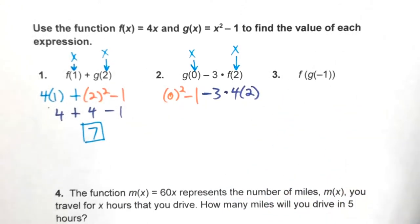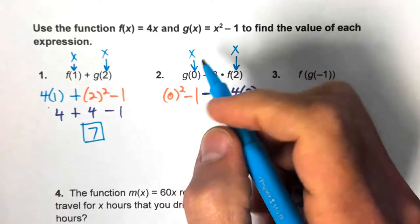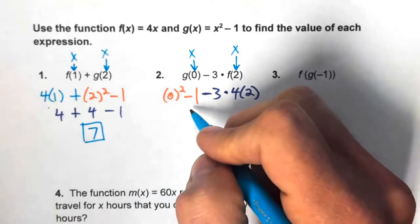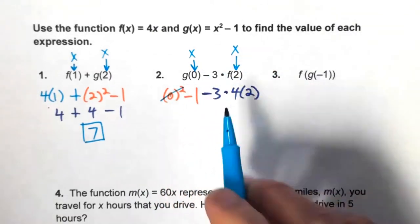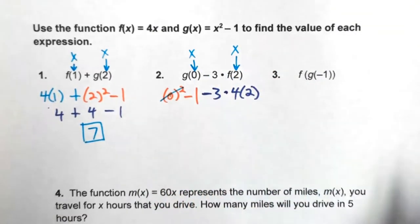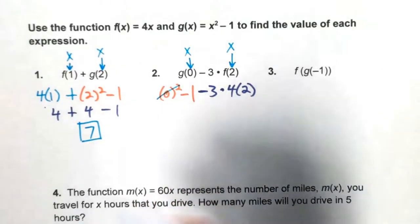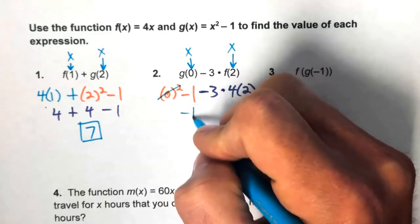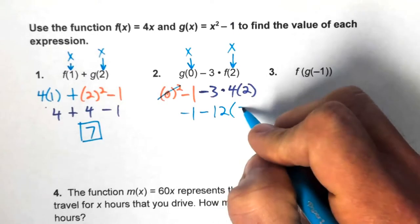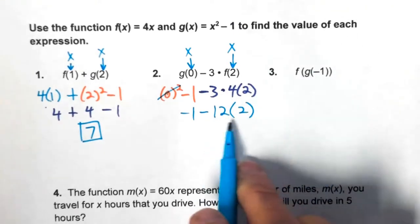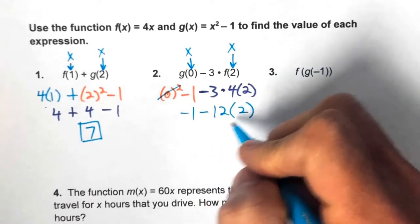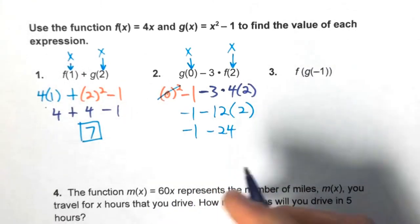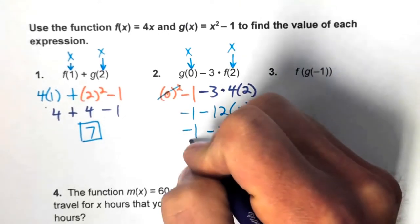Using order of operations: 0² is 0, so 0 - 1 = -1. Then we handle multiplication before addition/subtraction: -3 times 4 is -12, times 2 is -24. Finally, -1 minus 24 equals -25.